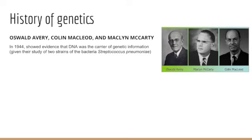They found that they could transform the properties of the two types of bacterial cells, making the harmless one into a virulent form of the bacterium using this transforming principle. That helped clarify the chemical nature of genes. Ultimately, this led to proof that DNA carries genetic information, disproving theories that it was protein and not DNA that was the genetic material.